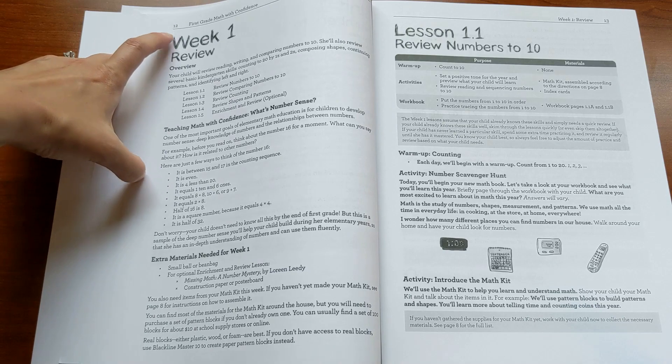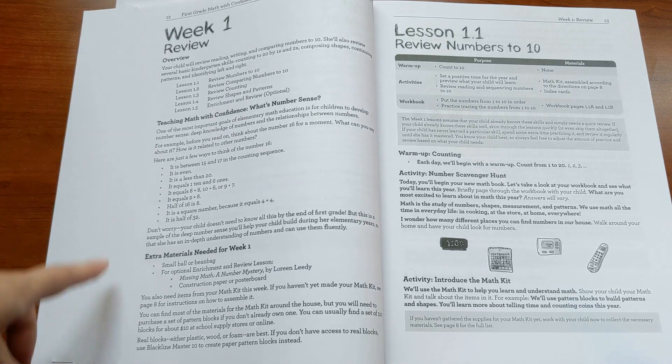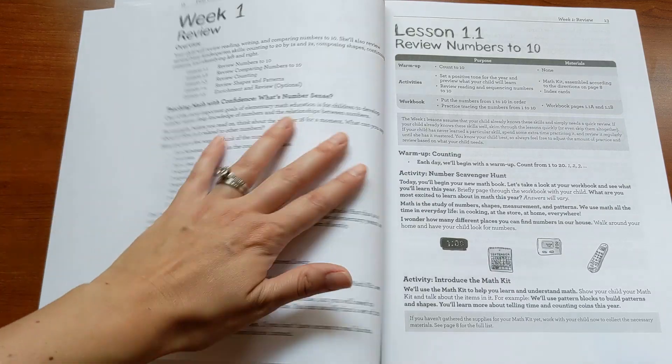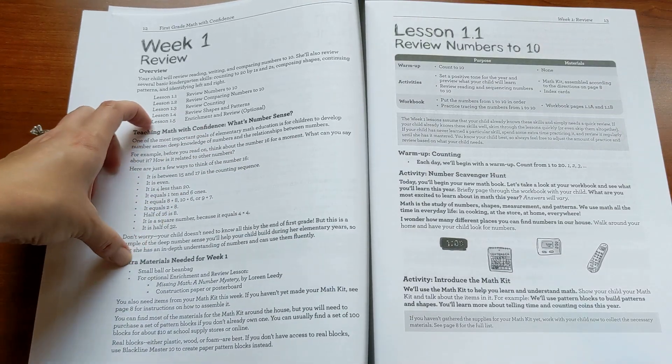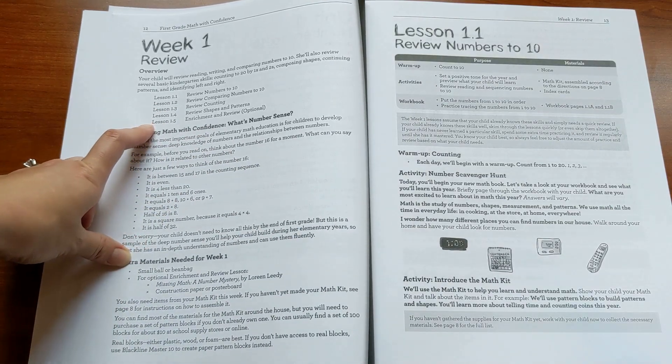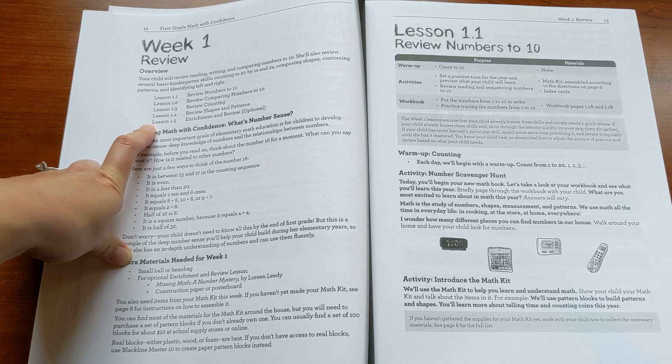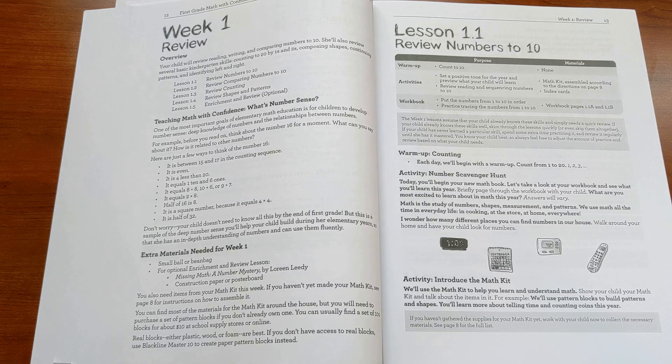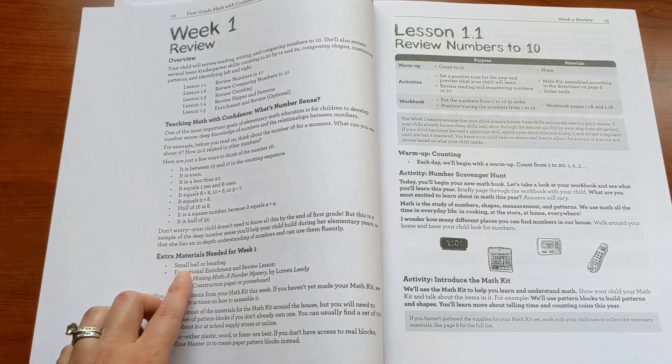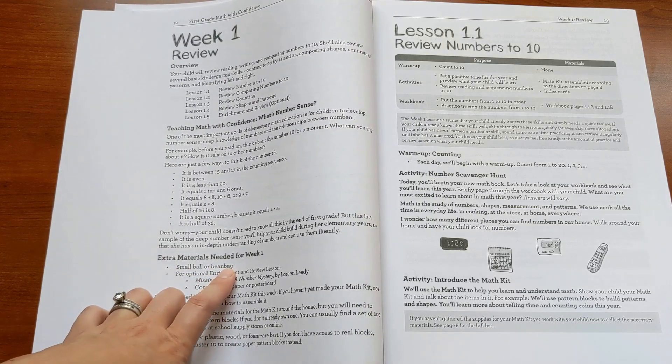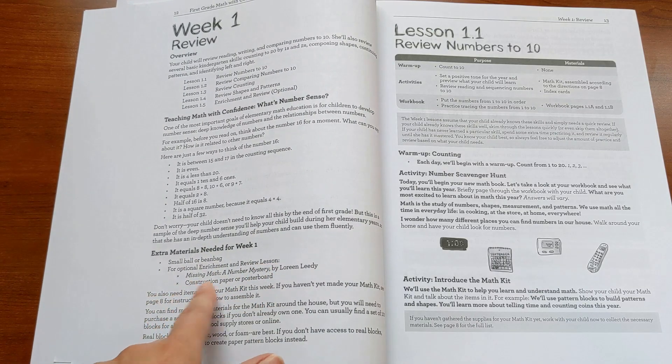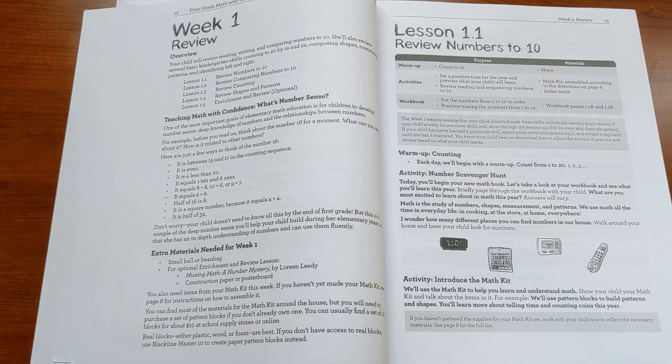Then each unit is divided into weeks. Week one is a review unit. Here there's the overview, some teaching math with confidence - it's a little feature I include to help you grow your knowledge as a math teacher as you're teaching - and then any extra materials you need. These are typically really simple. Like this week, you'll need a small ball or bean bag for the regular lessons. And if you choose to do the optional enrichment lesson, you'll need a picture book and some construction paper. That's it.